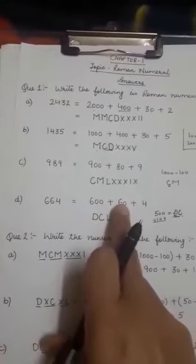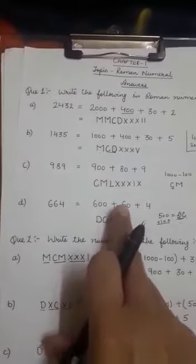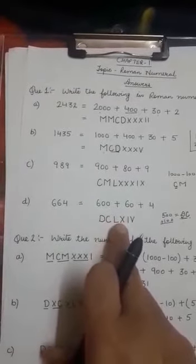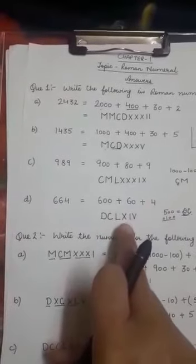So for 600 I have DC. For 60, how can I make 60? 50 plus 10 makes 60. So L is for 50 and X will be added on the right of L. And for 4, I have IV.